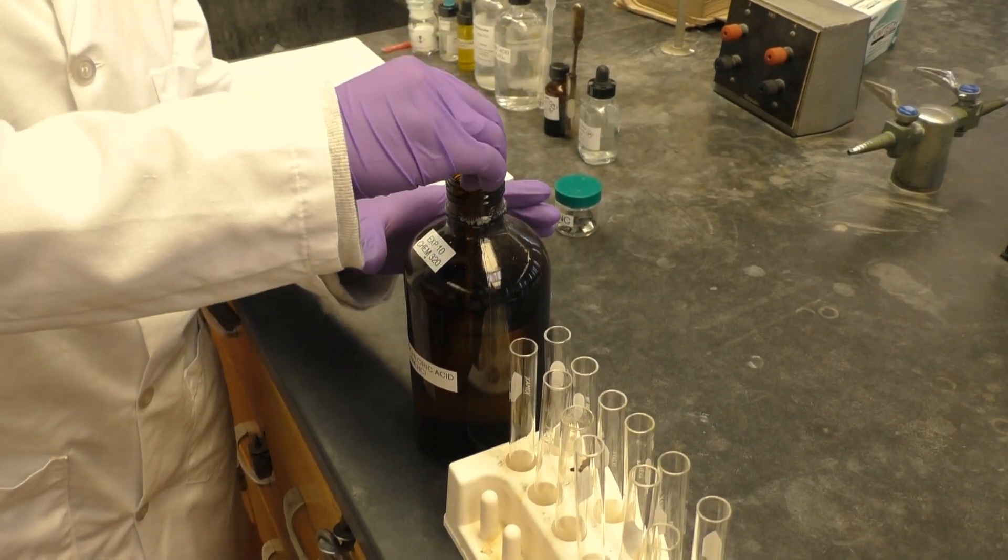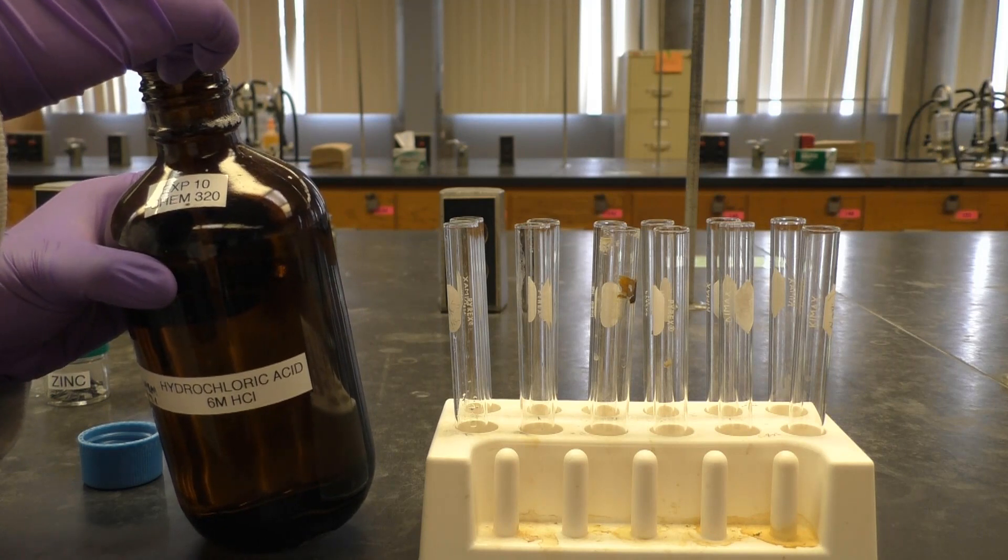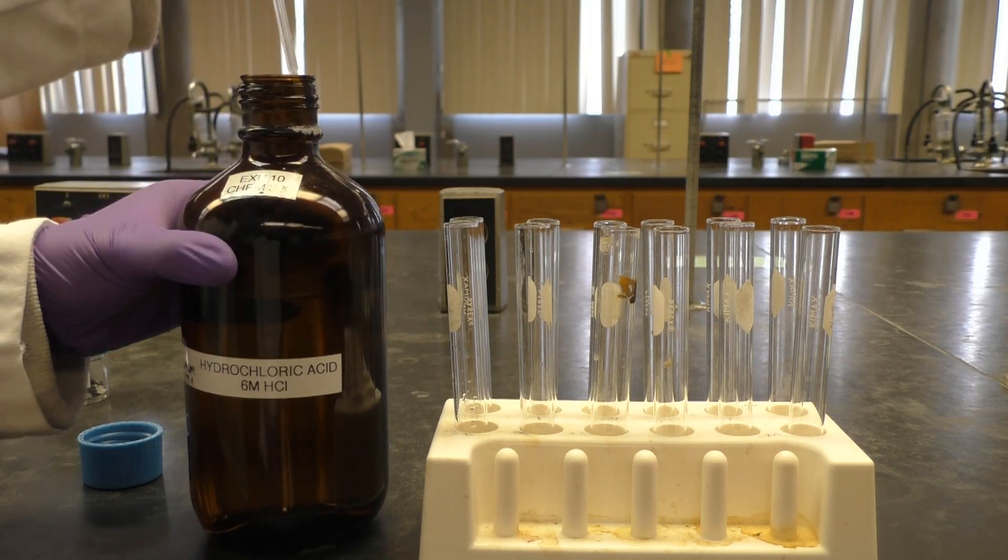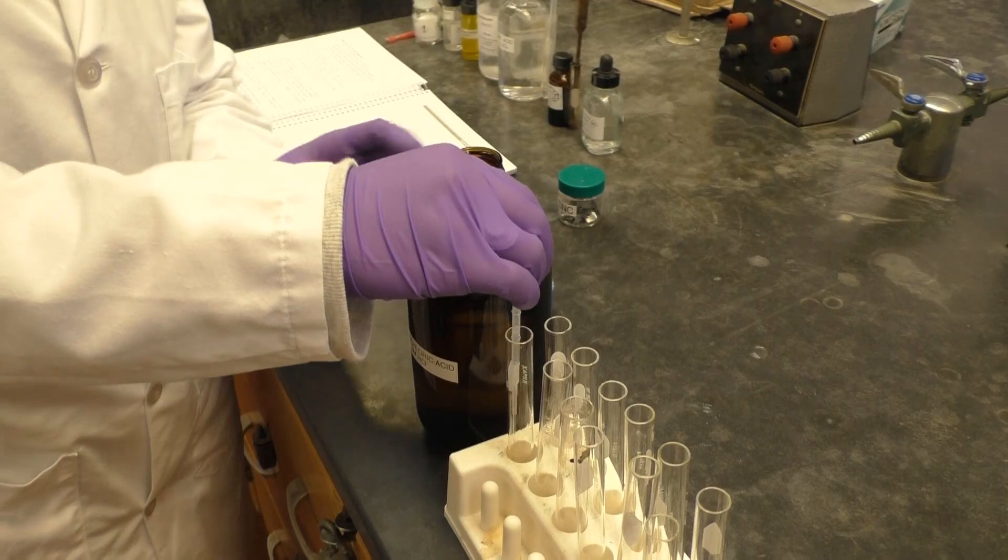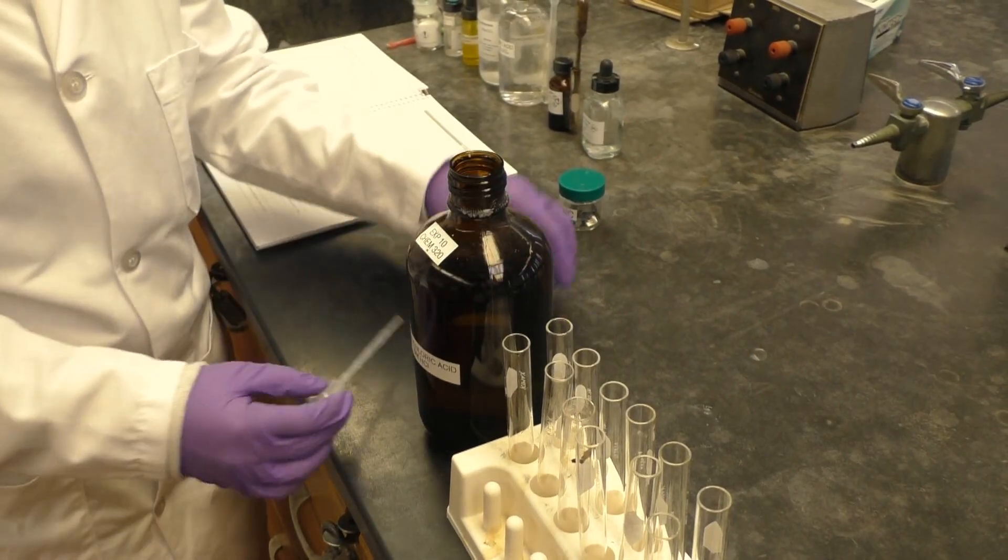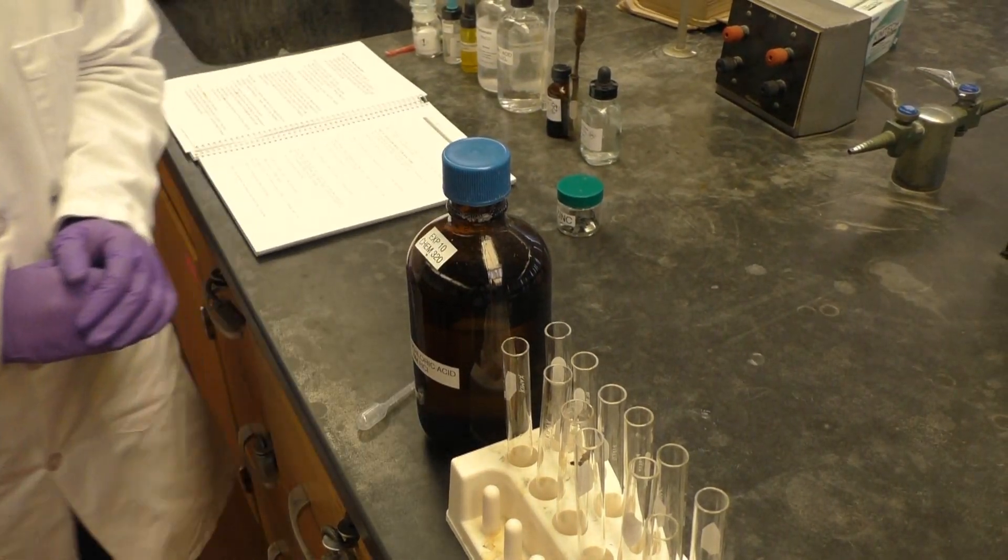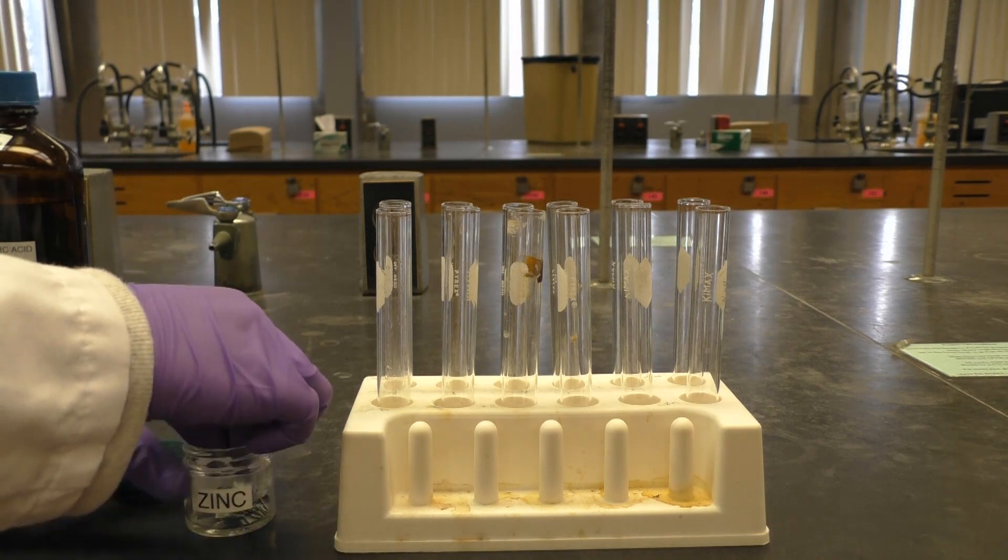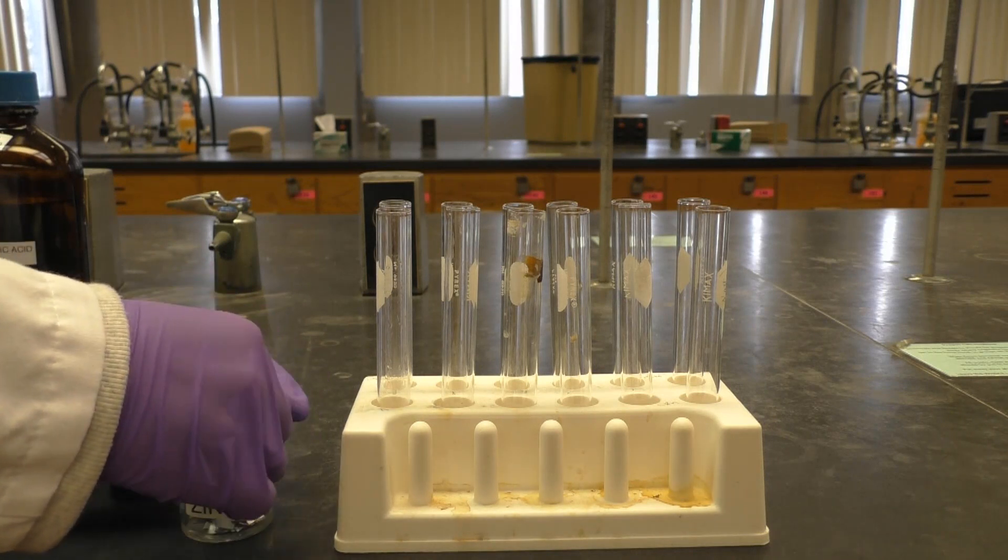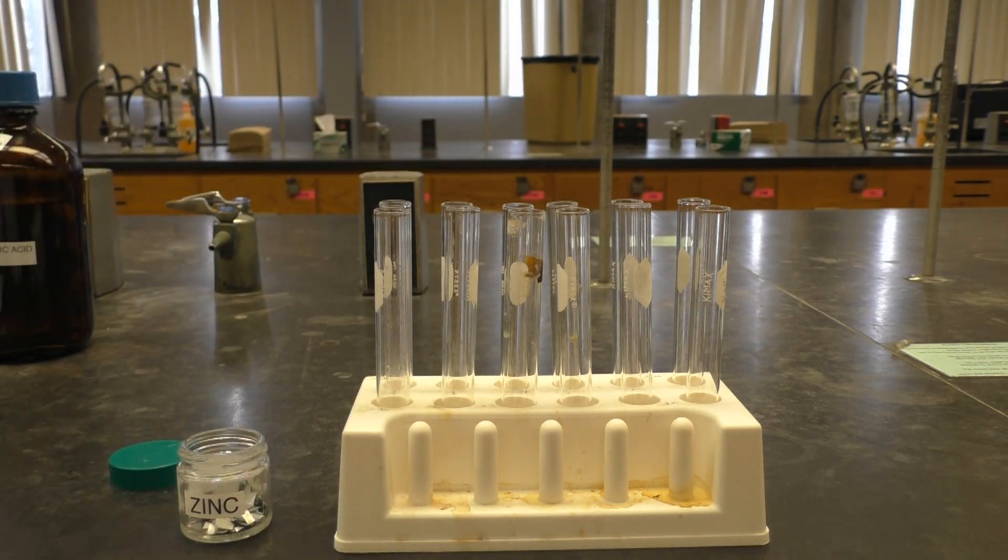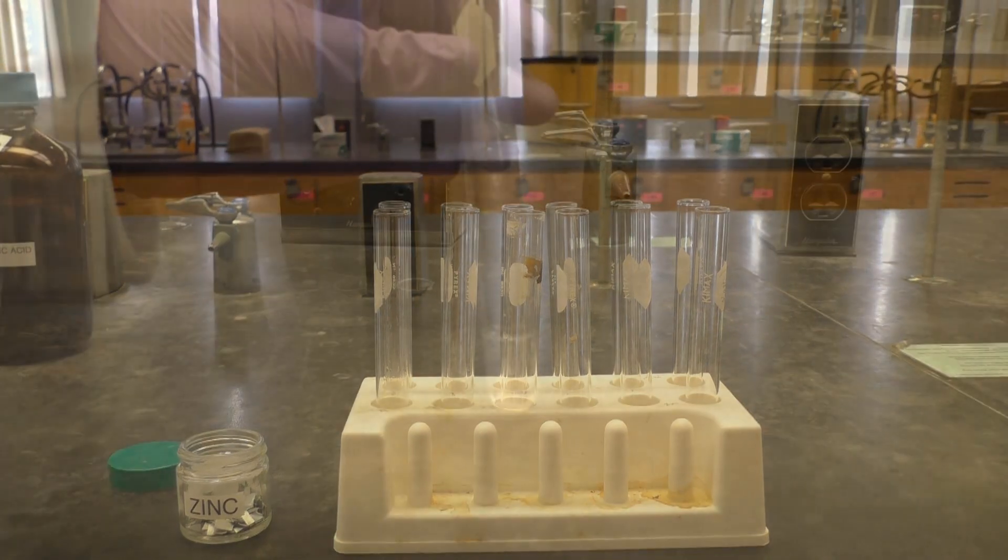So you don't need to measure out this amount, just add two pipetfuls. Then just add a small piece of zinc to your hydrochloric acid and carefully watch what happens. Be sure to record all observations in your notebook.